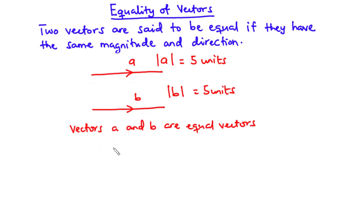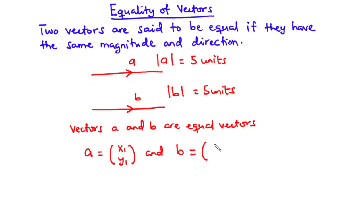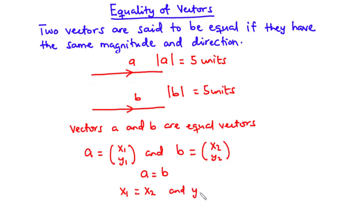In terms of their components, two vectors are said to be equal if their corresponding components are the same. Thus, if vector A has X and Y components X1, Y1, and vector B has X and Y components X2 and Y2, then since the vectors A and B are equal, X1 is equal to X2 and Y1 is also equal to Y2.